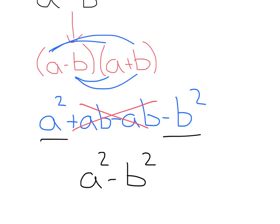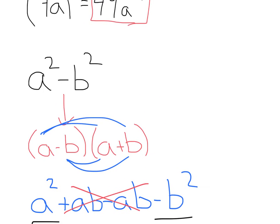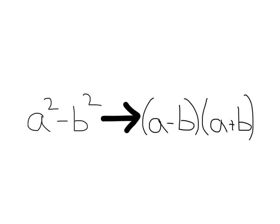And because that happens, that leaves us with this factoring rule. a squared minus b squared is going to factor to a minus b times a plus b. The main trick to this is identifying what your squares are. From there, it's pretty simple.